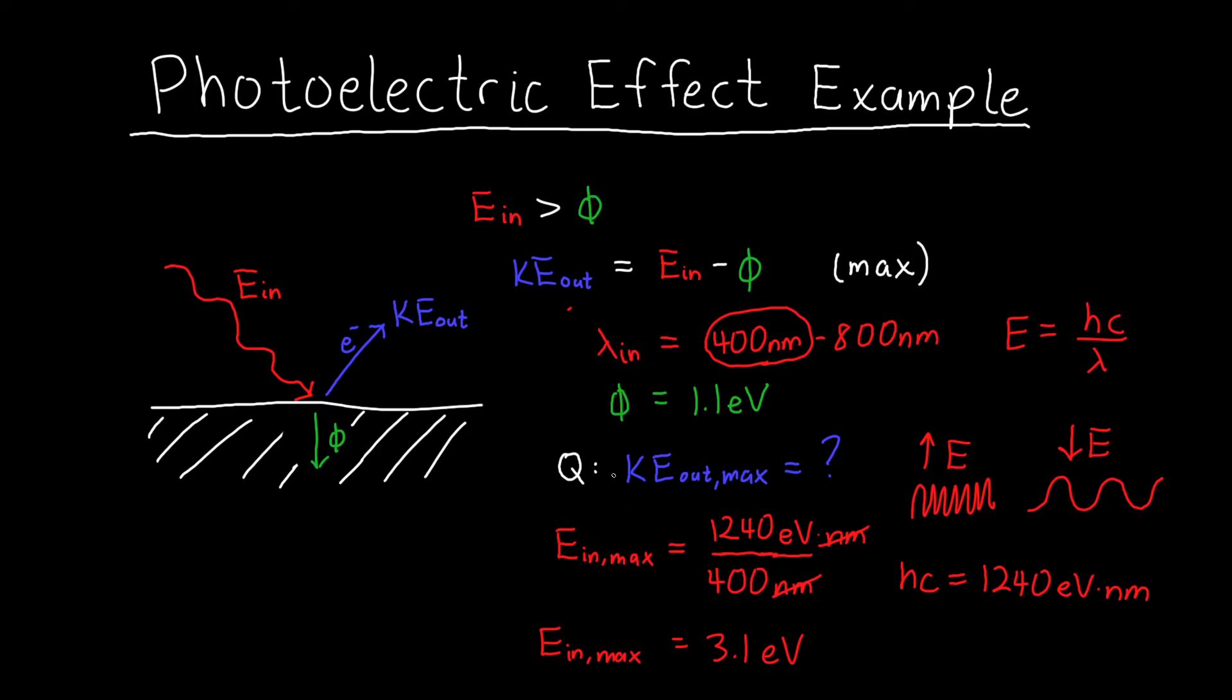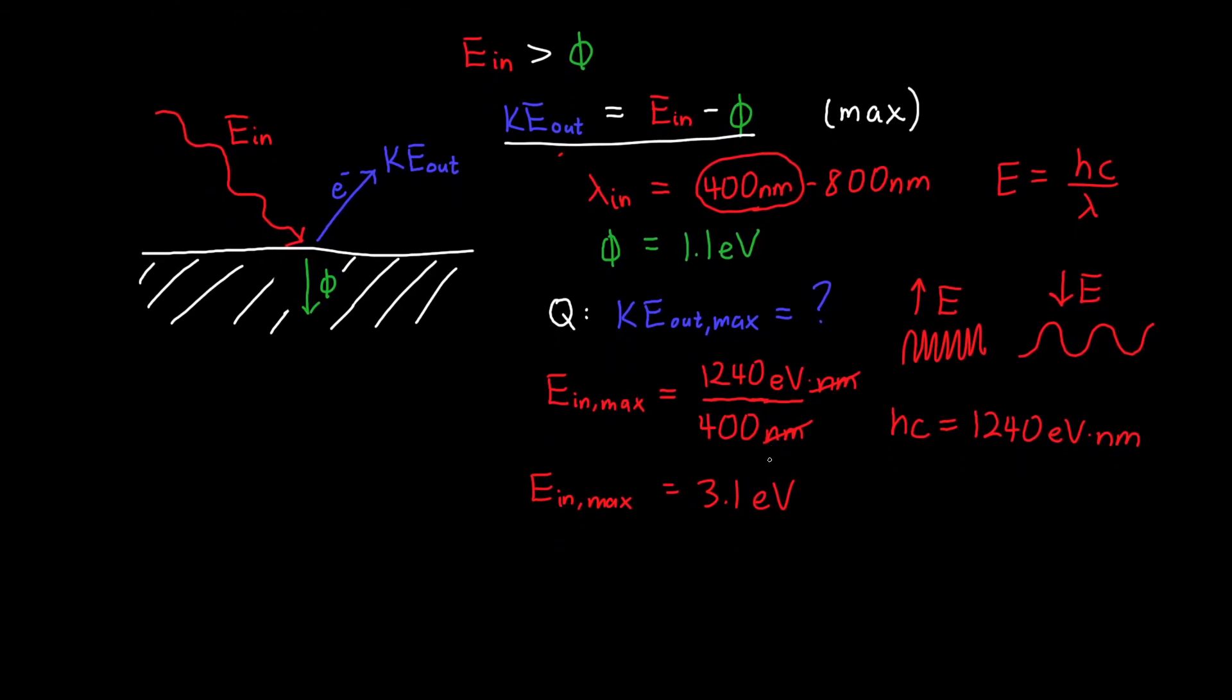Now we can use this to figure out the kinetic energy by plugging everything into this equation here. The kinetic energy of our electron is just our input energy minus the cost that we pay to free the electron or the work function. And so if we plug everything in, we'll get that the output kinetic energy, or the maximum output kinetic energy,